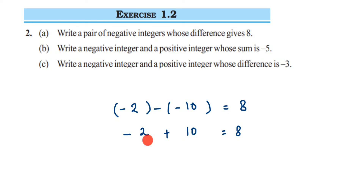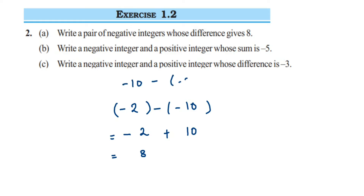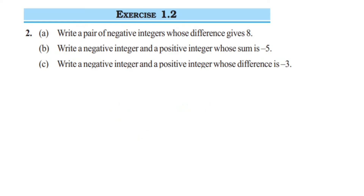Now you can see we have integers with different signs and we're doing addition. When you add integers with different signs, you subtract them — so 10 minus 2 gives you 8 — and you put the sign of the greater number. 10 is greater and its sign is plus, so the answer is plus 8. If you interchange and take minus 10 minus minus 2, the answer will be minus 8. That is why I gave you that frame first — to help you select the numbers and then proceed.